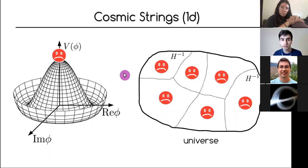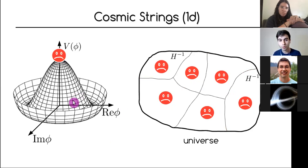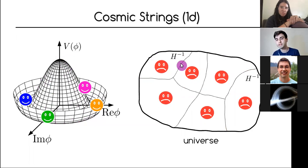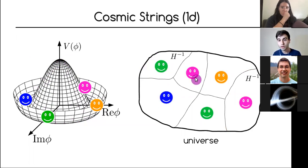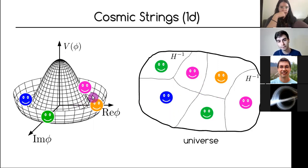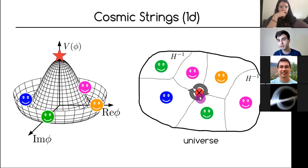For cosmic strings, they are a generalization of domain walls — they are one-dimensional objects. Instead of breaking a potential with a Z2 symmetry, we break a U(1) symmetry. So instead of having just two equivalent vacua, you have an infinite number of them. There can be peculiar points where the field configuration winds once around the minima. This trapped energy is what we call a cosmic string.